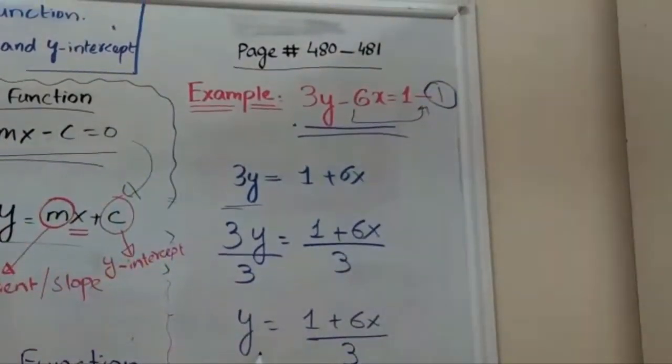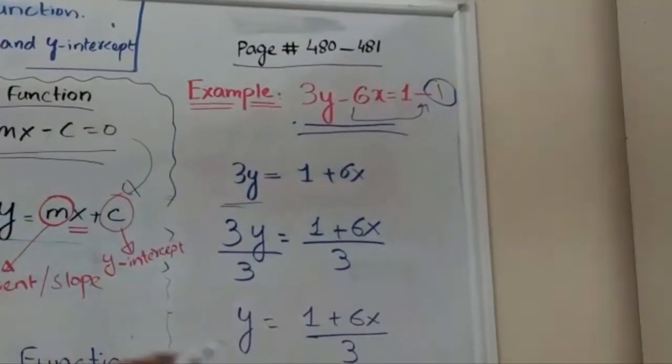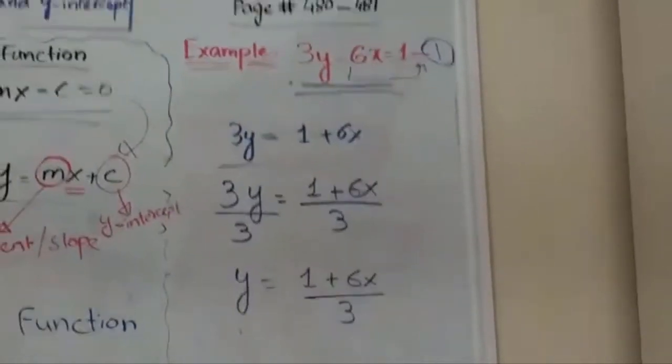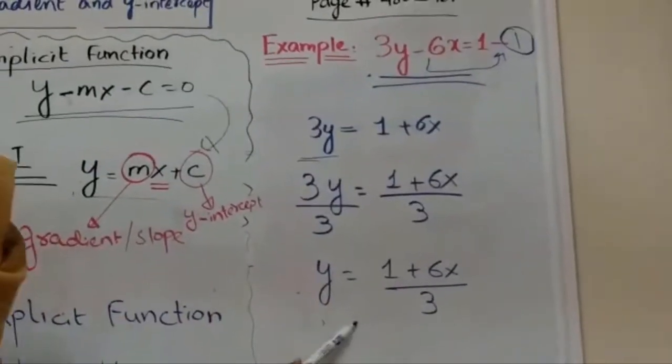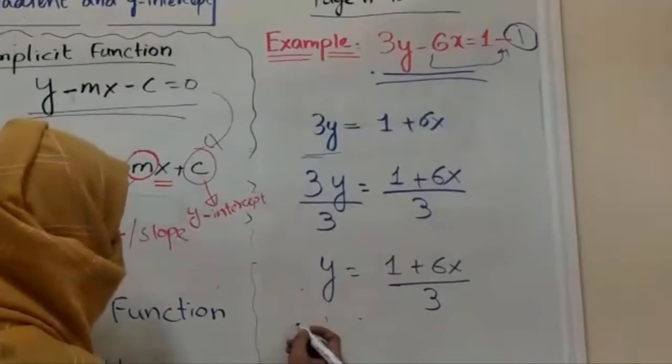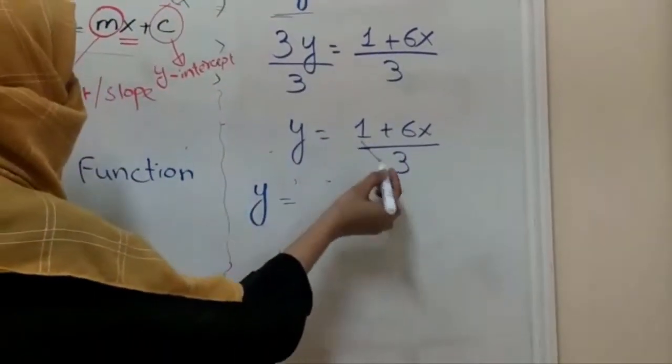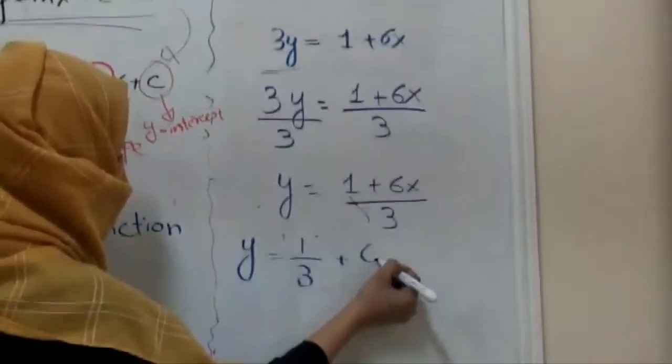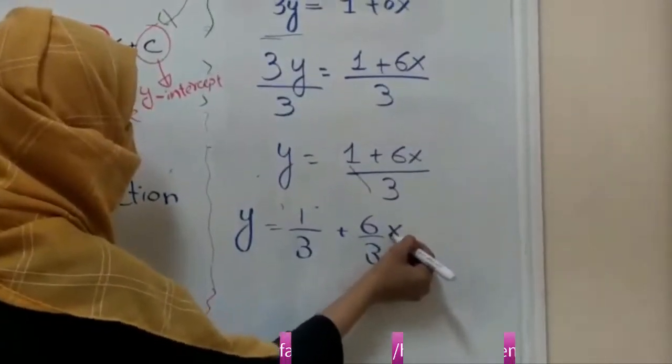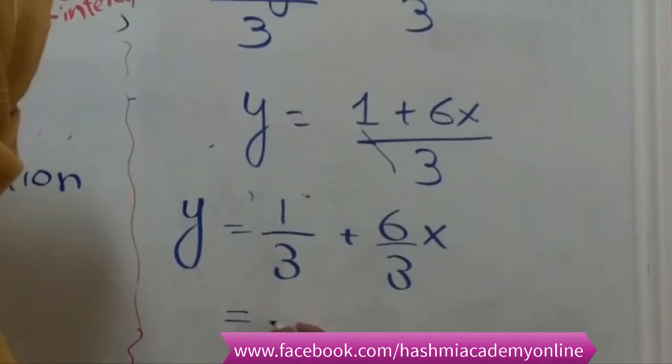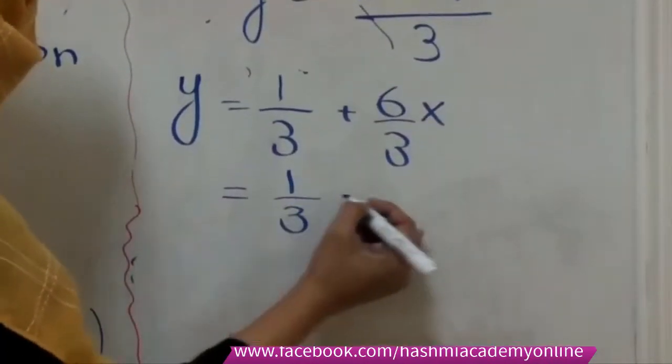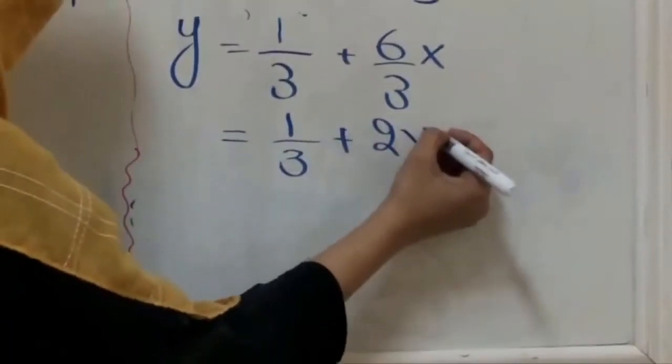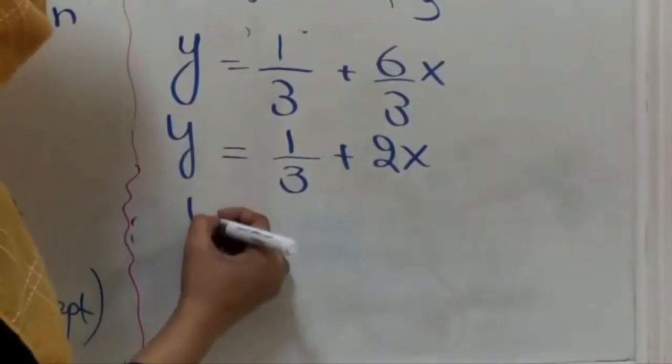But here it is not with the standard equation - it doesn't match with the standard equation. So what we have to do: we have to make it like standard equation. So I'm going to separate this fraction: 1 by 3 plus 6 by 3 times x. If more simplification should be done over here: plus 2x.